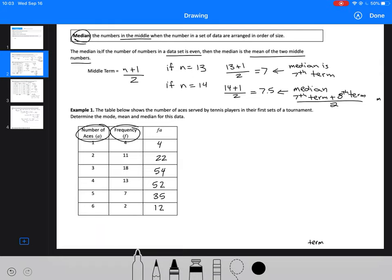The other thing we need to know is how many we actually have in this set. So to do that, we're going to add up our middle column. 4 plus 11 is 15, 15 and 18 is 33, 33 and 13 is 46, 46 and 7 is 53, plus 2 is 55.